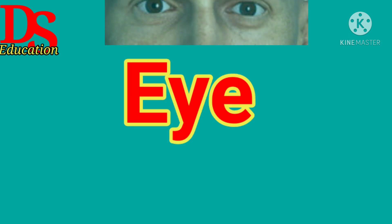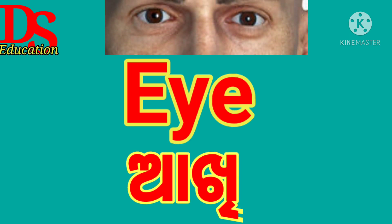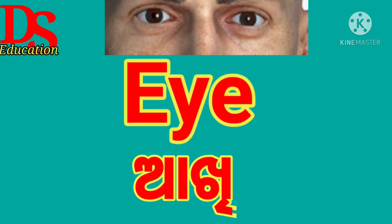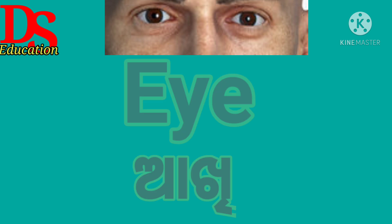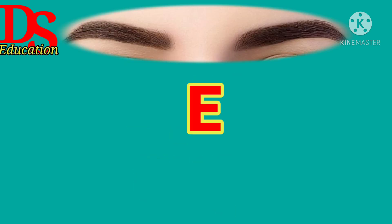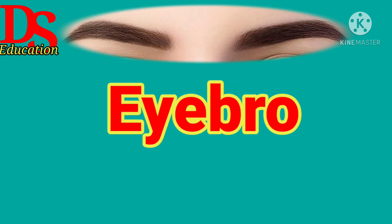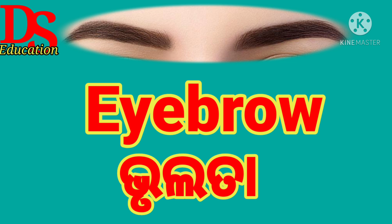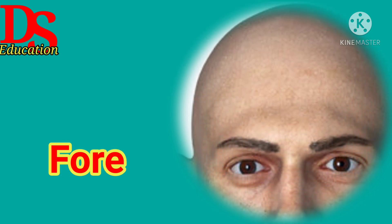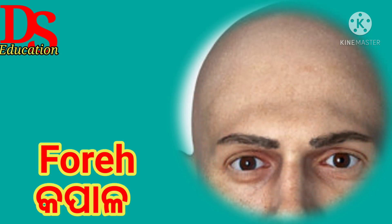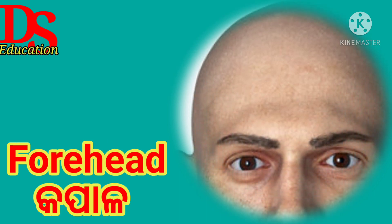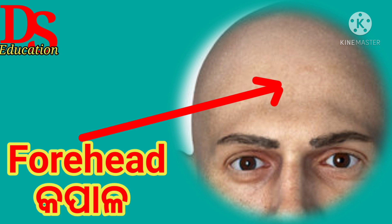E-Y-E. Eye. Eye means Aki. V-R-O-W. Eyebrow. Eyebrow means Brulota. F-O-R-E-H-E-A-D. Forehead means Kupar.